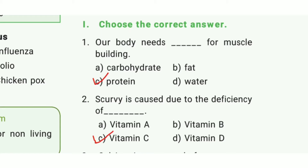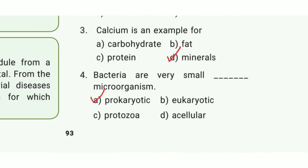Choose the correct answer. First one: our body needs dash for muscle building. The answer is option C — protein. Second one: scurvy is caused due to deficiency of dash. The answer is option C — vitamin C. Third question: cashew is an example for dash. The answer is option D — minerals.